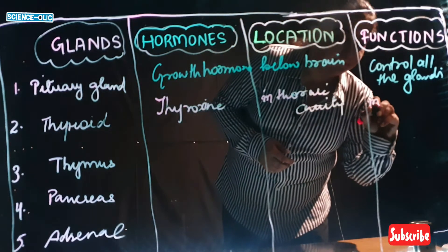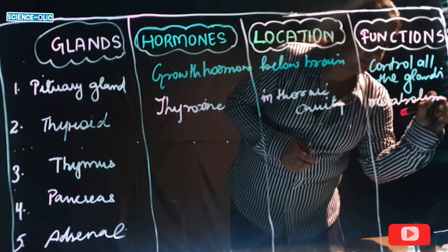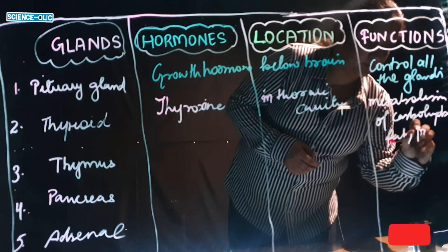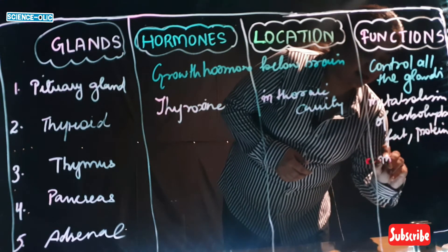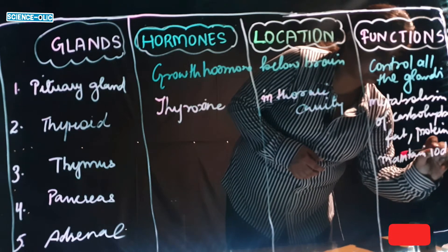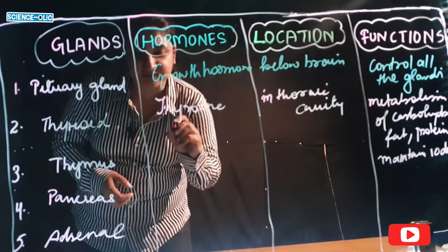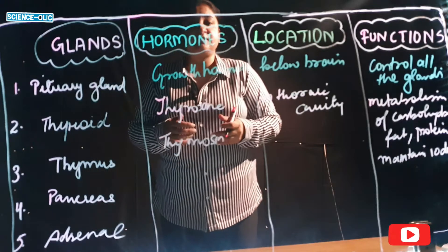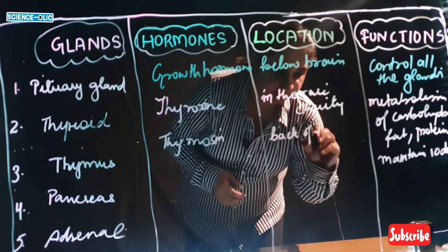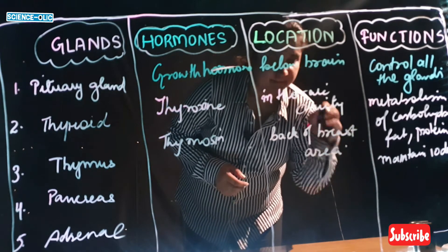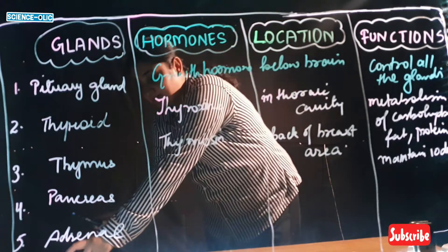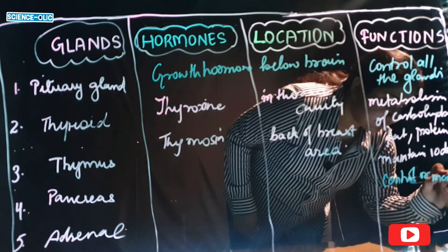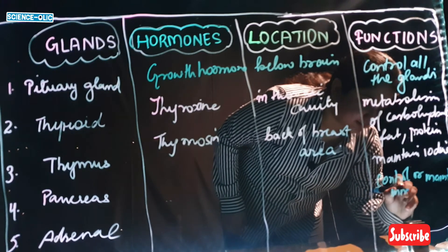The thyroid helps in metabolism of carbohydrates, fats, and proteins and helps maintain iodine levels. Next is the thymus — it produces thymic hormones and is located at the back of the breast area. It helps in maintaining immunity and controlling T cells and B cells.